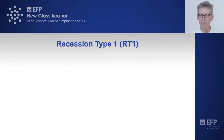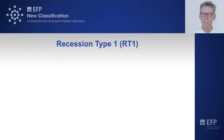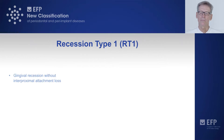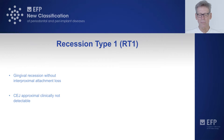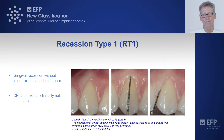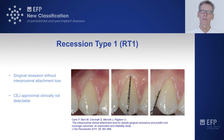The three recession types are explained in more detail. Recession type 1 (RT1) refers to buccal recessions without interproximal attachment loss. Clinically, the CEJ on the approximal surface is not detectable. This is an example taken from the original publication by Cairo et al., 2011, showing a typical example of a recession of type 1.